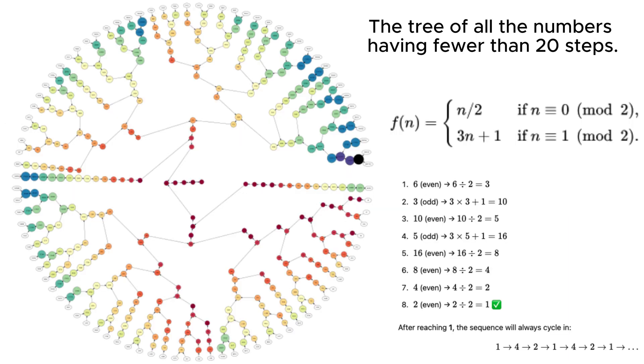The central challenge lies in proving that no number can escape the loop, either by growing infinitely or falling into an undiscovered cycle different from the known 4, 2, 1 pattern.